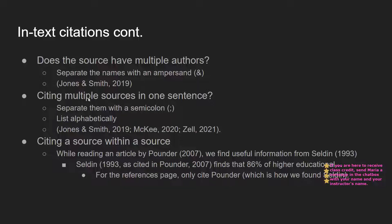What if you're citing multiple sources within one sentence? If you have a statistic from one source, a fact from another, and a third source, you separate them with semicolons inside one set of parentheses — for example: (Jones & Smith, 2019; M…, year; Z…, year). The sources are formatted the same way — author last name, comma, year — and listed alphabetically. Period goes on the outside of the parentheses.